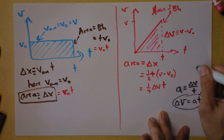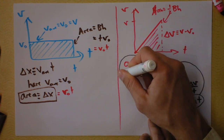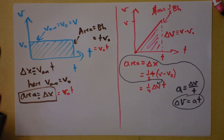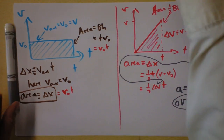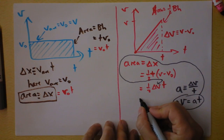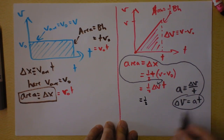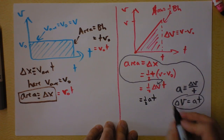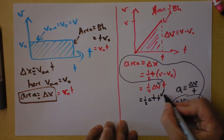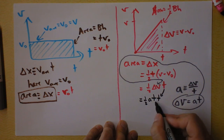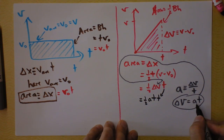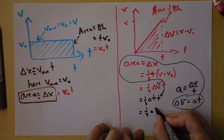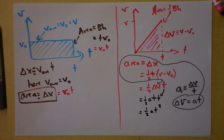Taking that result and substituting it in, the area is then one-half acceleration times time times time — time squared. So the area is one-half acceleration times t squared. Now we're really getting somewhere.